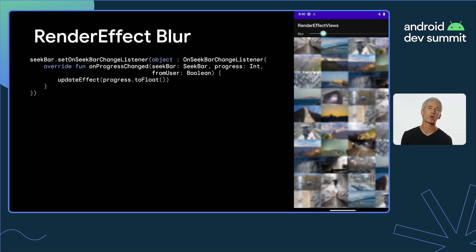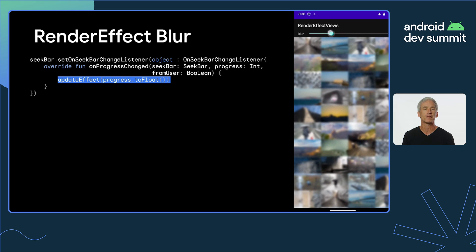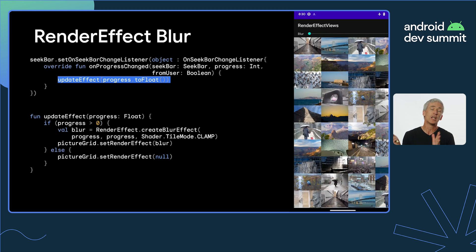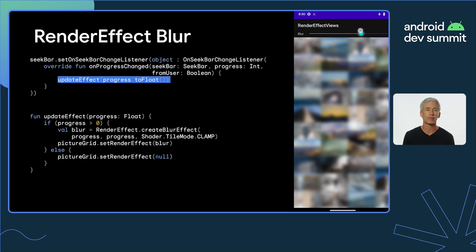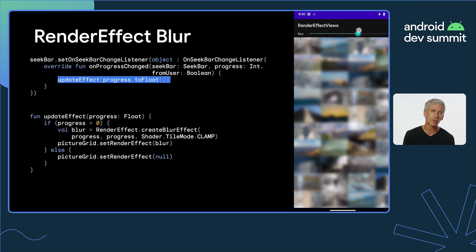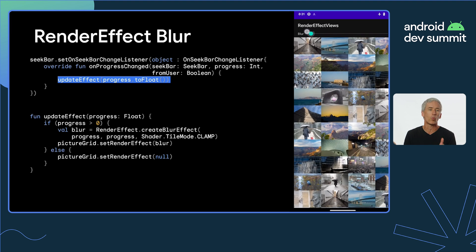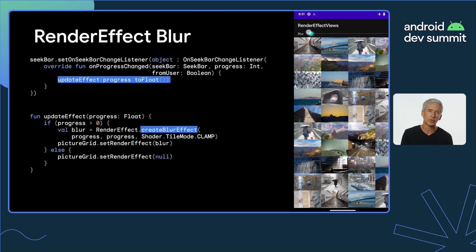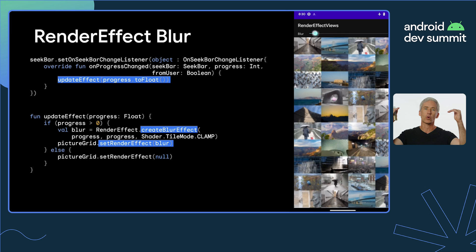So how does this work? As the seek bar gets dragged around, we get this listener called, and there we call update effect with the current value of the progress. Update effect then takes that value and says: if it's zero, we're not going to set a render effect at all — instead we set render effect to null. But if it's greater than zero, it's going to be a value from 1 to 50, and we're going to create a blur effect with the radius that results from that value. Then we set the render effect on the container, and it's going to blur everything inside of it.